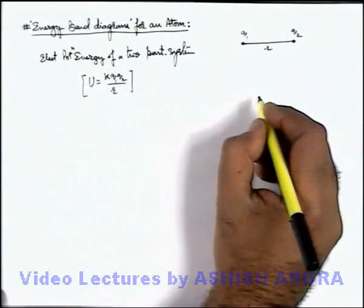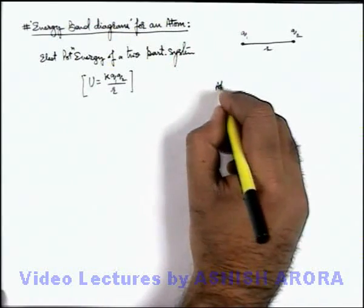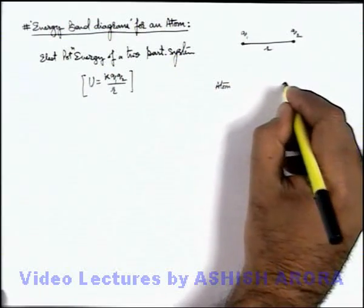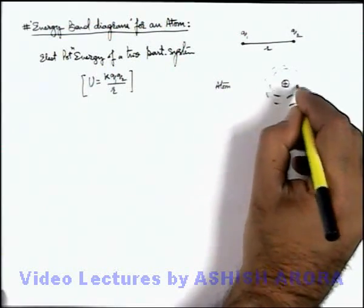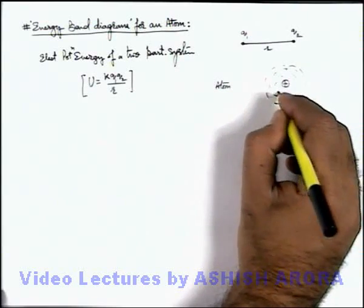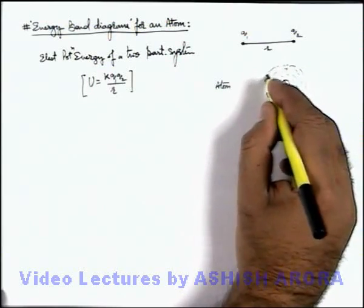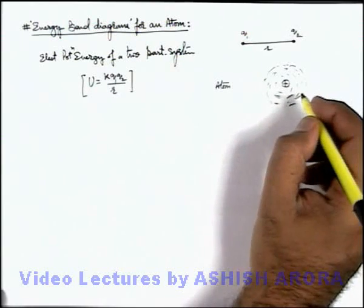Similarly, if we talk about an atom, we know well that in case of an atom there is a nucleus. In the surrounding of nucleus, in the electron cloud, electrons are moving around, which are basically established in different orbitals of this atom.